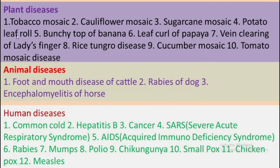Viruses cause many diseases to plants, animals, and humans. Plant diseases caused by viruses include: tobacco mosaic, cauliflower mosaic, sugarcane mosaic, potato leaf roll, bunchy top of banana, leaf curl of papaya, vein clearing of lady's finger, rice tungro disease, cucumber mosaic, and tomato mosaic.